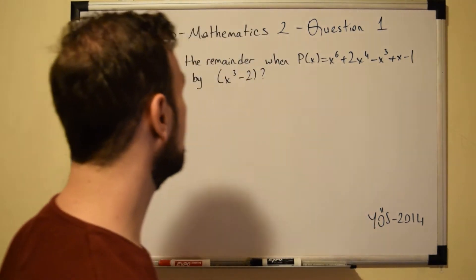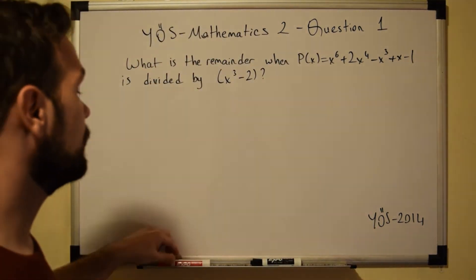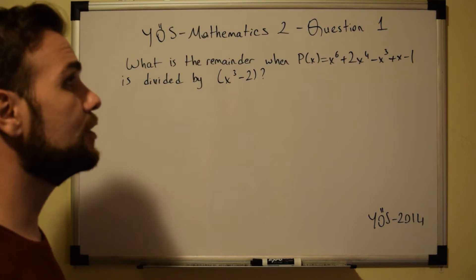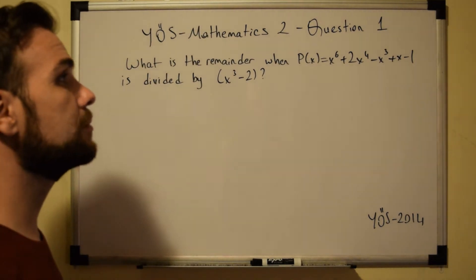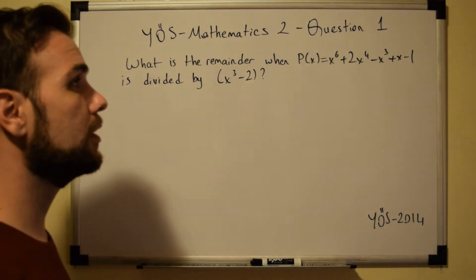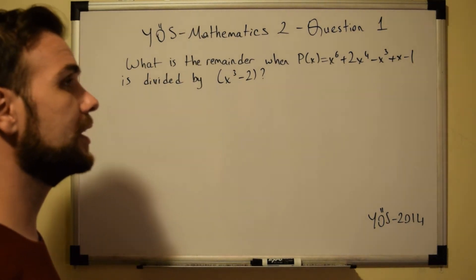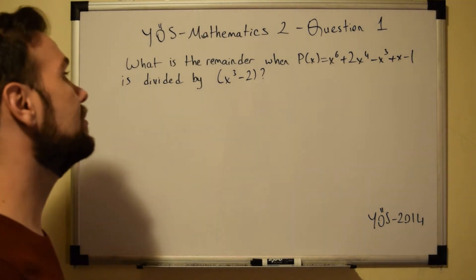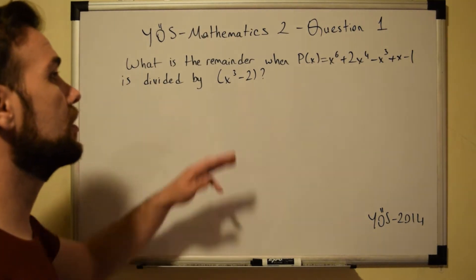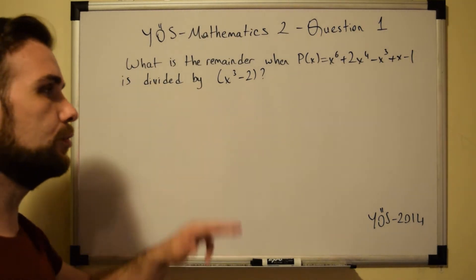In this question we have: what is the remainder when P(x) equals x to the power of 6 plus 2x to the power of 4 minus x to the power of 3 plus x minus 1 is divided by x to the power of 3 minus 2?